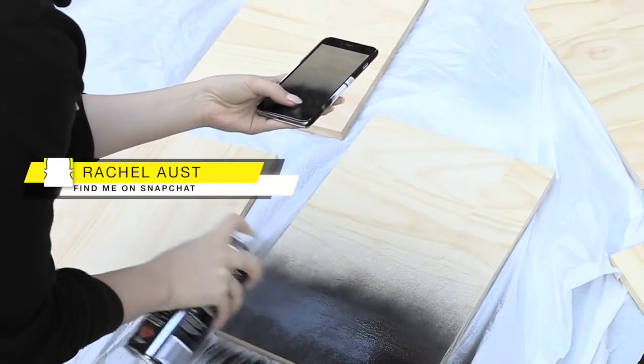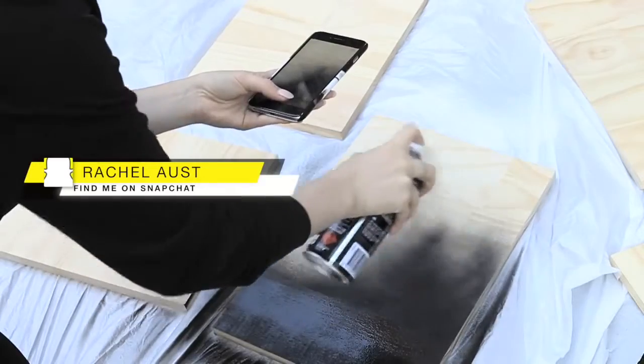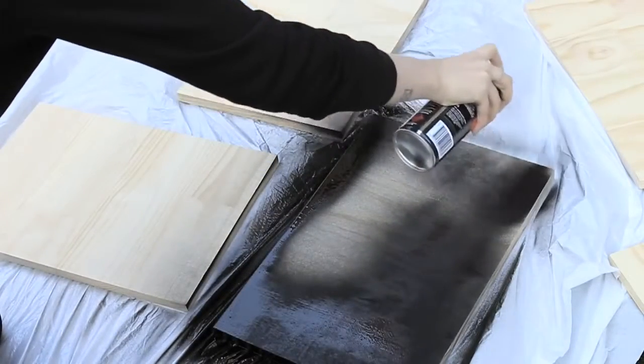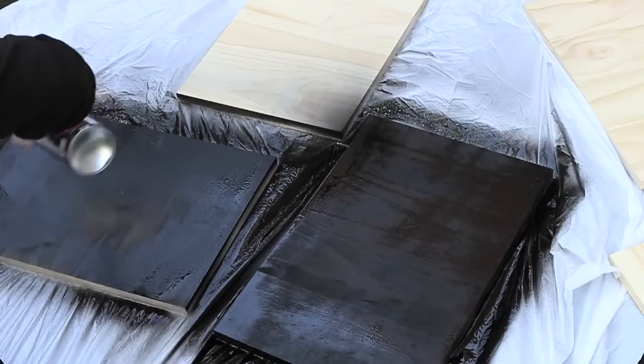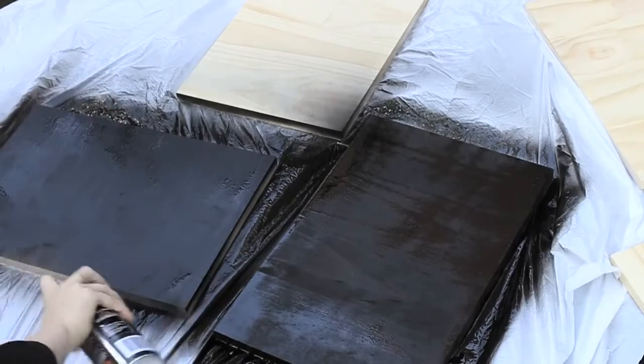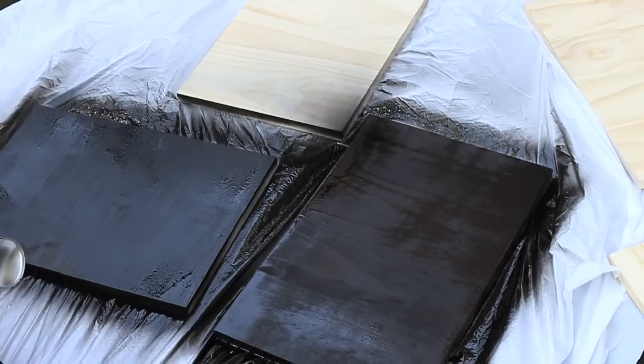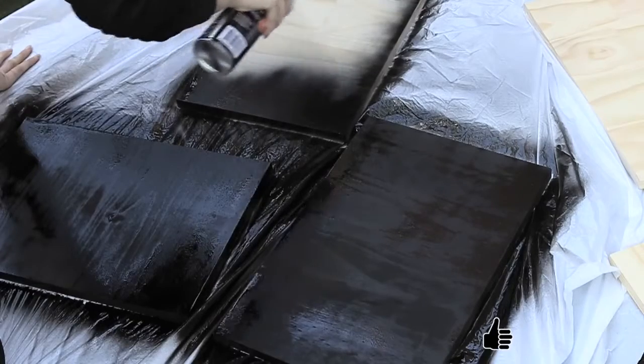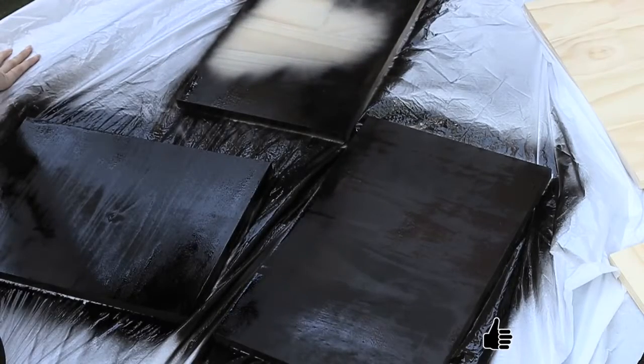And of course I'm going to Snapchat it for good measure. Feel free to find me on Snapchat if you want to see more behind the scenes of my videos. Painting them now isn't going to be the final look of the product, but it's going to make sure that there is black on the inside. Otherwise once it's already assembled it's going to be a bit harder to paint the interior of the table.